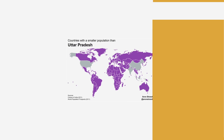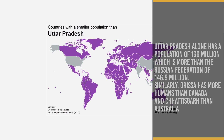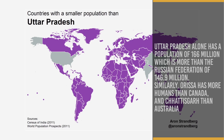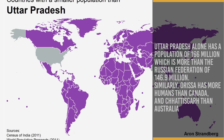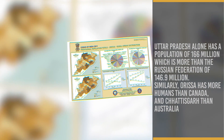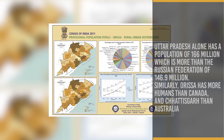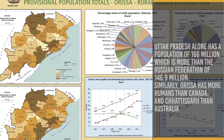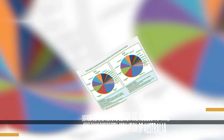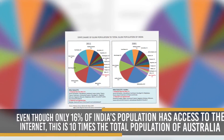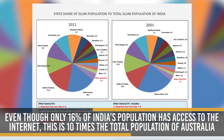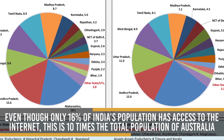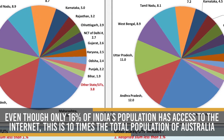Uttar Pradesh alone has a population of 166 million, which is more than the Russian Federation's 146.9 million. Similarly, Orissa has more humans than Canada, and Chhattisgarh than Australia. Even though only 16% of India's population has access to the internet, this is 10 times the total population of Australia.